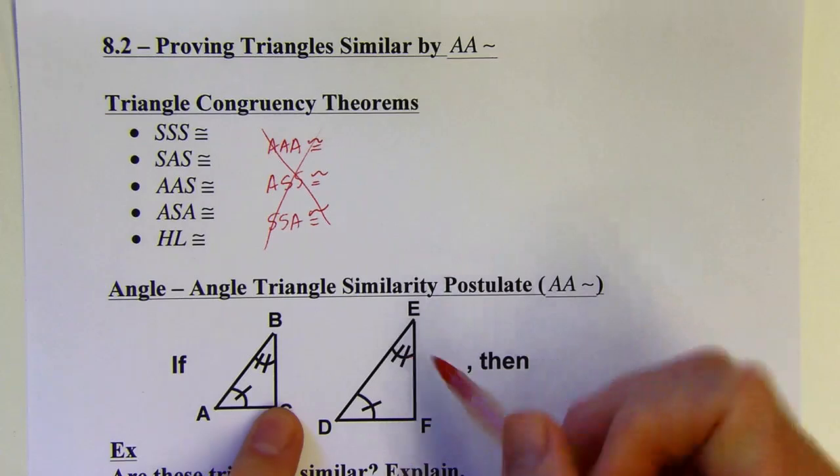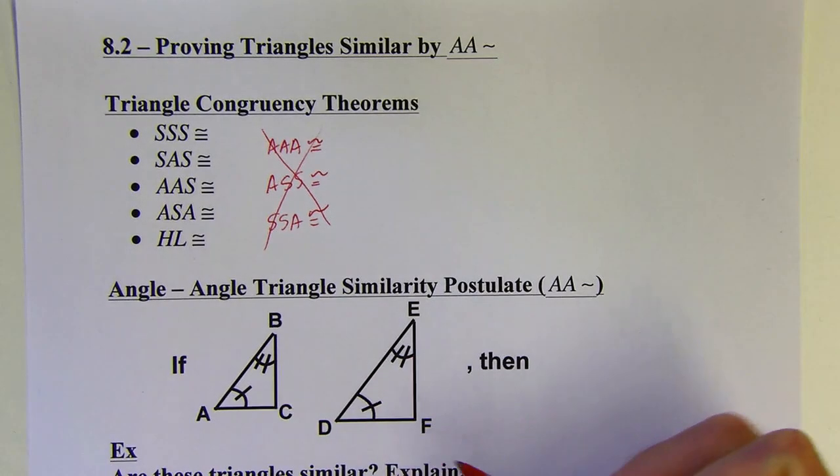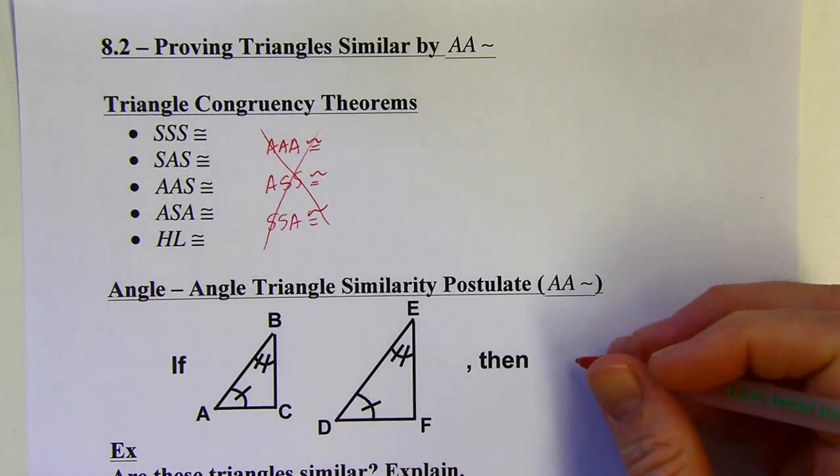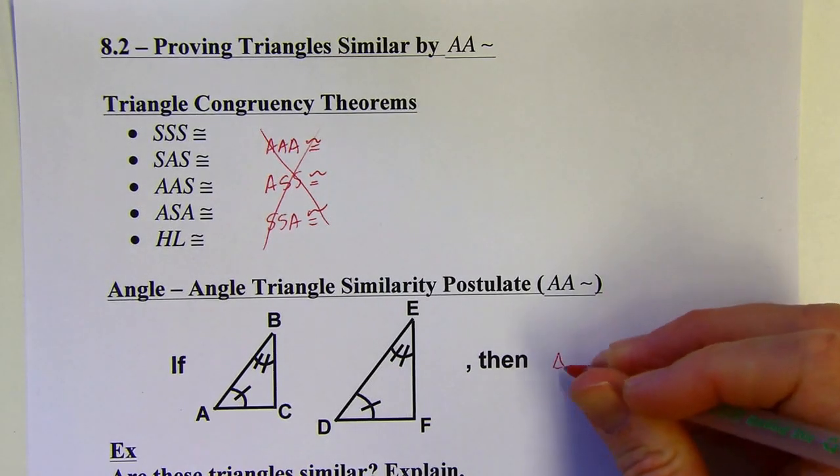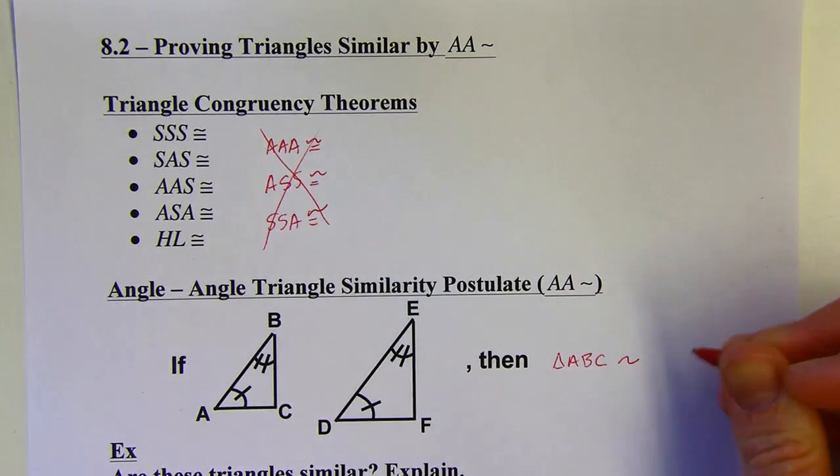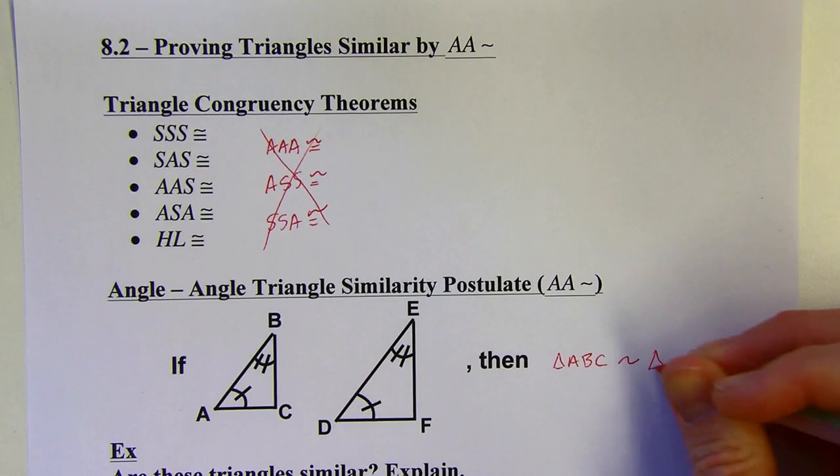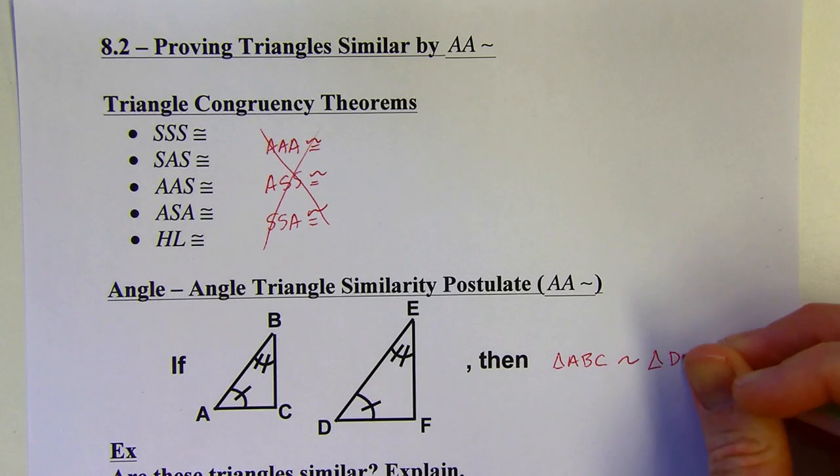You don't really need the third angle because the third angles are always going to be congruent if the first two sets are. But yeah, then these two triangles are similar. Triangle ABC would be similar to triangle DEF.